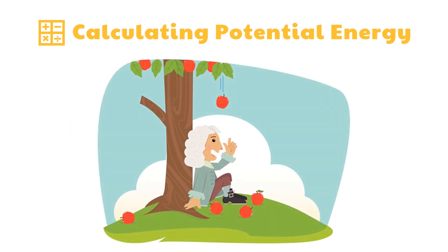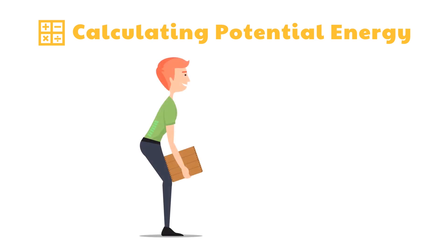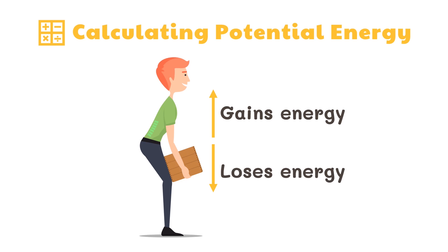Now we already know about the force of gravity. It is the force that the Earth exerts on all objects on its surface, always directed downward or towards the center of the Earth. When an object is lifted from the ground, the work done is against the force of gravity. An object gains energy when raised from the ground, and loses energy when made to fall. The energy gained or lost by the object is simply called potential energy.